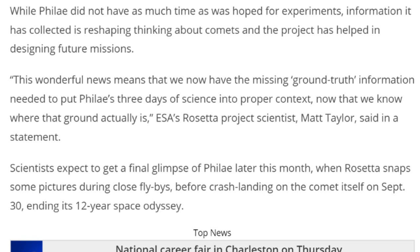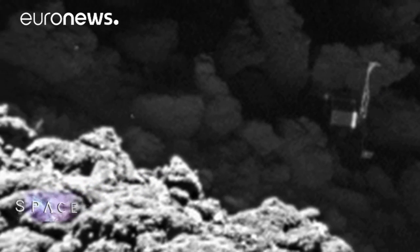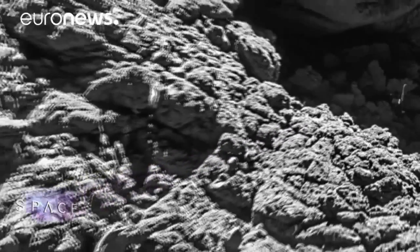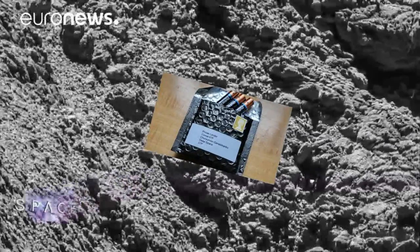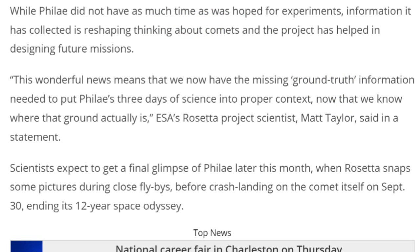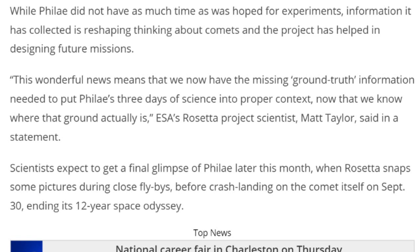Philae did not have as much time as they had hoped for experiments. Information it has collected is reshaping thinking about comets and how much battery power to actually put on them. And the project has helped in designing future missions. Yeah, like, 'Hey man, way more batteries next time. At least send some mice up there so they can run in a hamster wheel.' Speaking of hamster's wheel, this wonderful news means that we now have the missing ground truth.